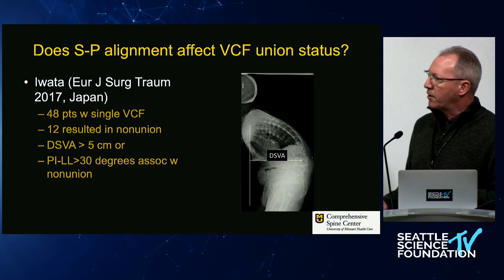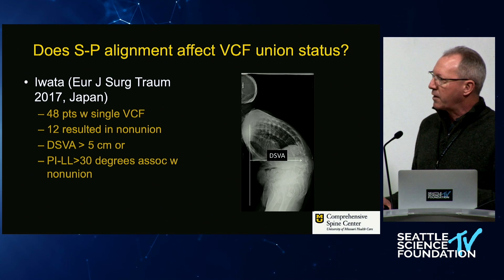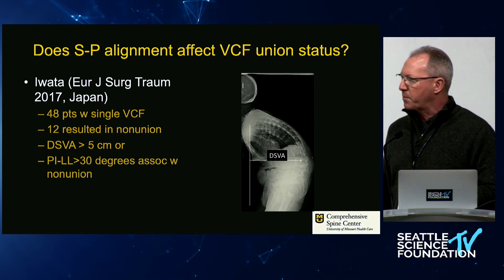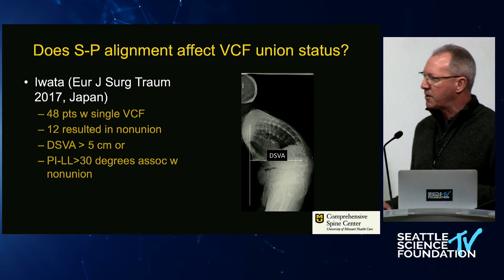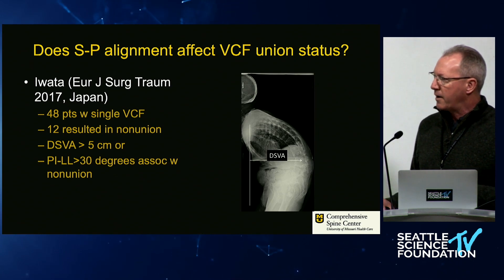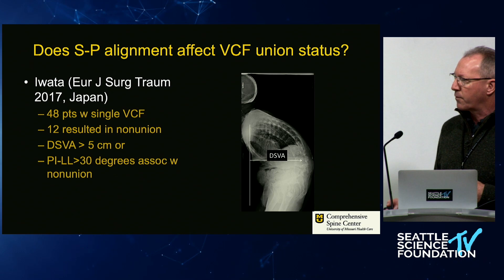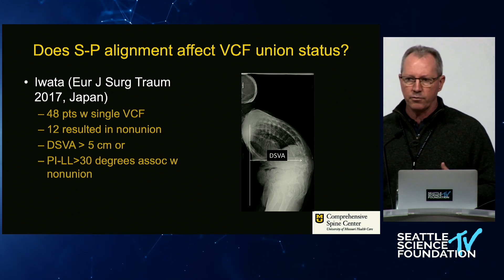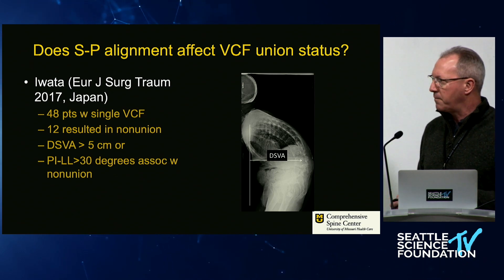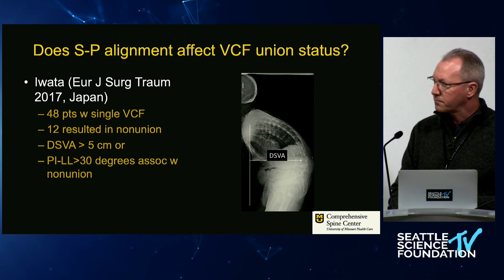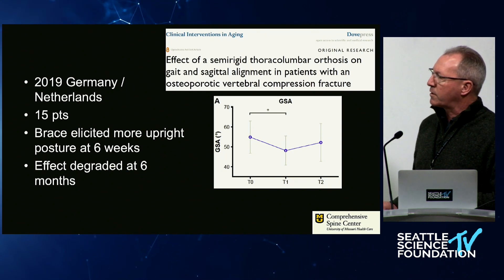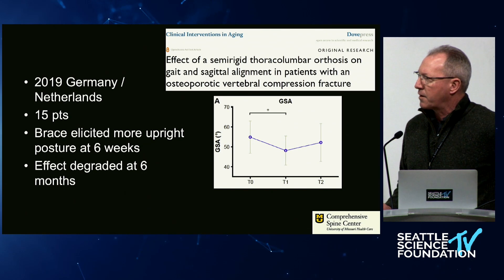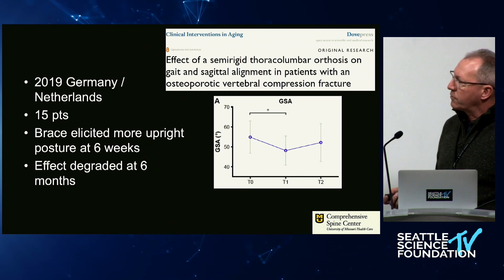Another paper from Japan — a series of 48 patients — looked at non-union: about a quarter of their patients went on to non-union. They also showed that a DSVA greater than 5 centimeters, or PI minus lumbar lordosis greater than 30 degrees, were associated with non-union. So the patients who were pitched further forward were at greater risk.